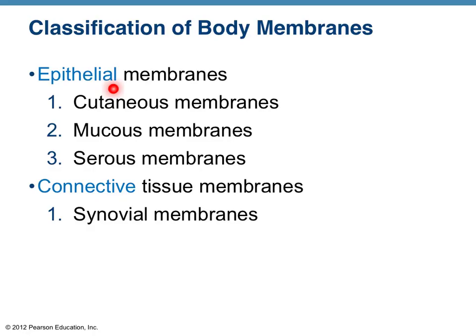There is just one type of connective tissue membrane. These are called synovial membranes, found in the joints. They line your articulating joints — the cavity within your knee, for instance.